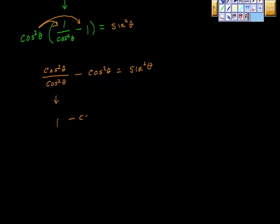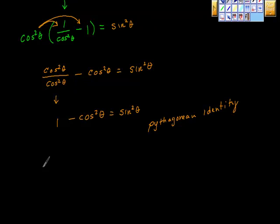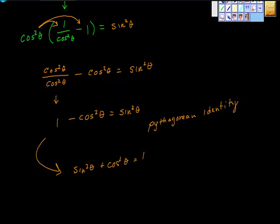Cosine squared theta over cosine squared theta is, in fact, 1. Bringing this down gives us 1 minus cosine squared theta equals sine squared theta. This is now proven through the Pythagorean identity — specifically that sine squared theta plus cosine squared theta equals 1, which we can algebraically rearrange to get that result. Problem solved.